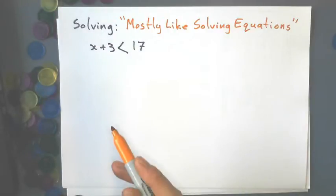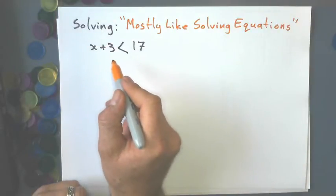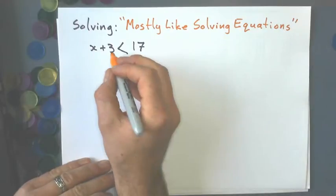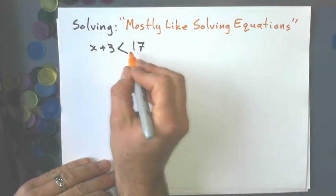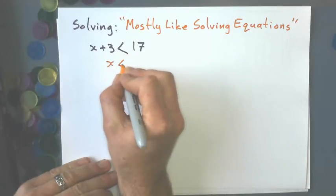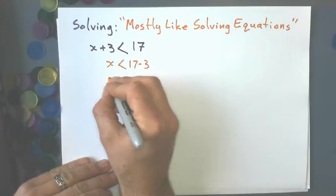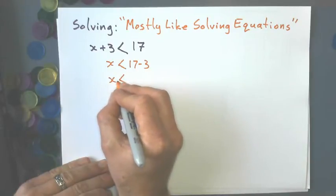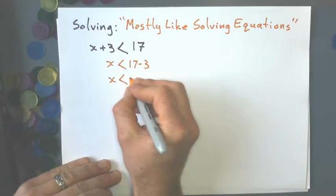What I mean is, we're going to treat this just like we would an equal sign, the less than sign. x + 3 < 17. So if I'm going to solve, I'd say okay, that's plus 3, subtract 3 from the other side, and my solution is x < 14.